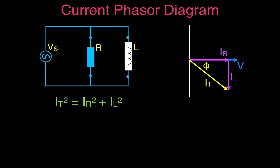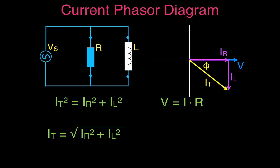Using the Pythagorean theorem — a² + b² = c² — since we have a right triangle, the total current is: I_total = √(I_R² + I_L²). We can also find impedance Z using Ohm's law: V = IZ, so Z = V_source / I_total, giving us impedance from the total current.